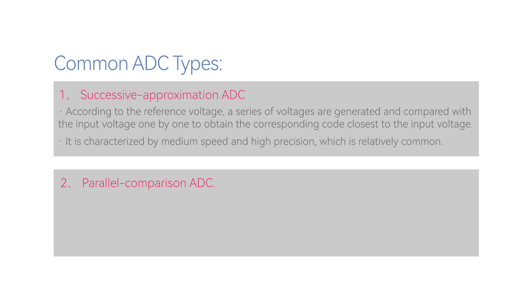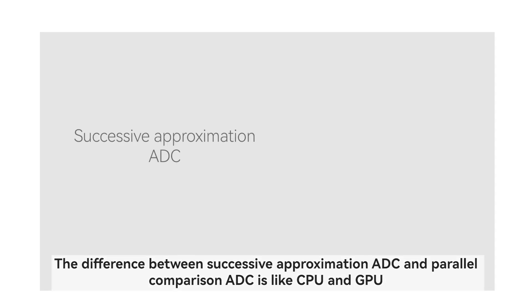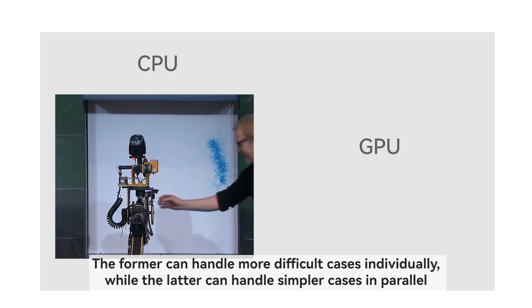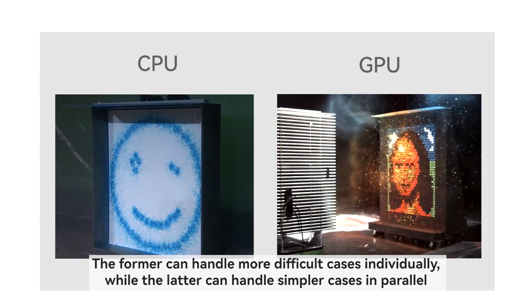2. Parallel Comparison ADC: A series of voltages are generated based on the reference voltage and compared at the same time, to obtain the corresponding coded value closest to the input voltage. It is characterized by high speed and low precision, and is suitable for occasions with high speed and low resolution. The difference between Successive Approximation ADC and Parallel Comparison ADC is like CPU and GPU. The former can handle more difficult cases individually, while the latter can handle simpler cases in parallel.